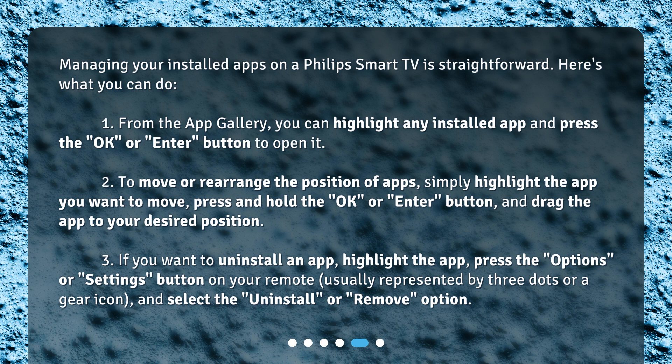3. If you want to uninstall an app, highlight the app, press the Options or Settings button on your remote — usually represented by three dots or a gear icon — and select the Uninstall or Remove option.